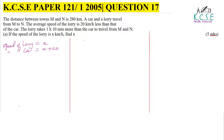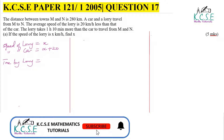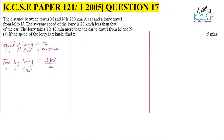Step number two is to obtain the time taken by the car and the time taken by the lorry. Time is given by distance divided by speed. The time taken by the lorry is 280 divided by X, and the time taken by the car is 280 divided by X plus 20.